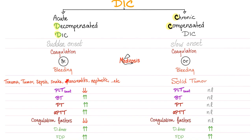The precipitating factors for acute decompensated DIC include trauma, tumor, sepsis, snake bites, pancreatitis, nephrotic syndrome, blood transfusion, and more. In chronic compensated DIC, it's just solid tumor.